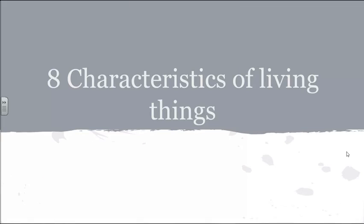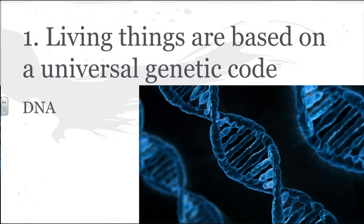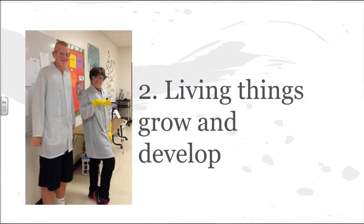Welcome to the eight characteristics of living things. The first characteristic that all living things share is that they are based on a universal genetic code. As far as we can tell, everything that's alive uses DNA as the molecule of heredity, and it's rather interesting to see how that plays out in different life forms.